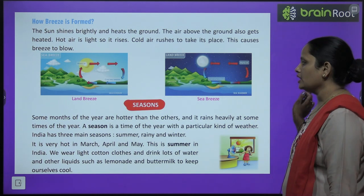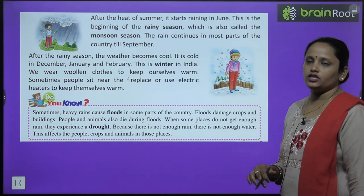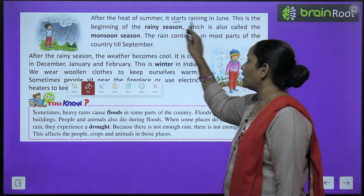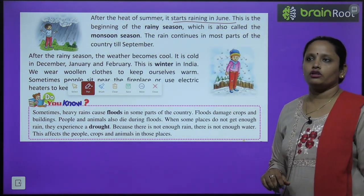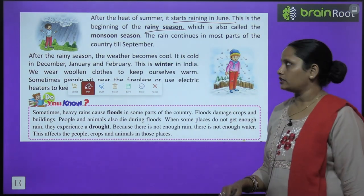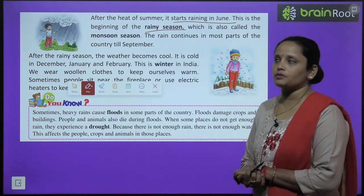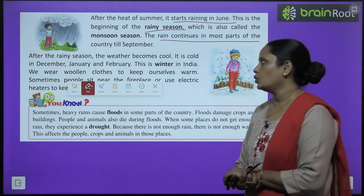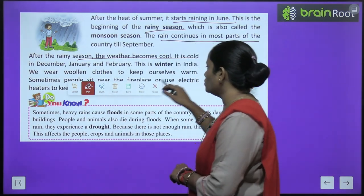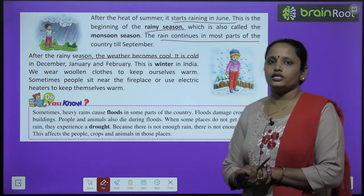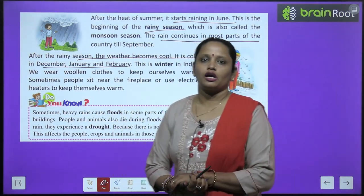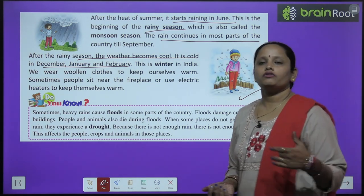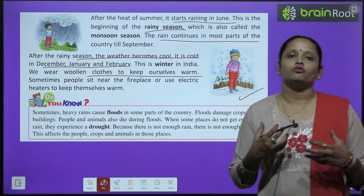After the heat of summer, it starts raining in June — this is the beginning of the rainy season, also called the monsoon season. The rain continues in most parts of the country till September. After the rainy season, the weather becomes cool. It is cold in December, January and February — this is winter in India. We wear woolen clothes to keep warm.